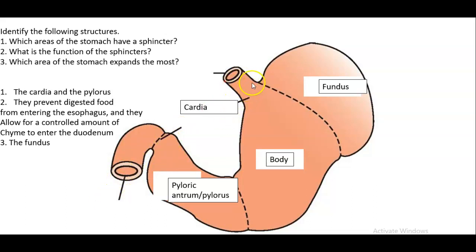What is the function? Well the cardiac sphincter prevents partially digested food and stomach acid from going back up the esophagus, and the pyloric sphincter helps to regulate or control the amount of acidic chyme that's coming from the stomach into the duodenum.